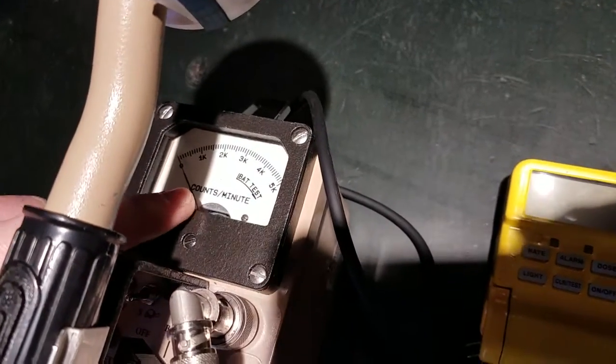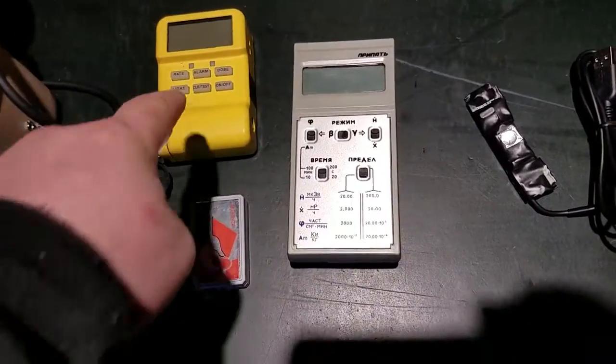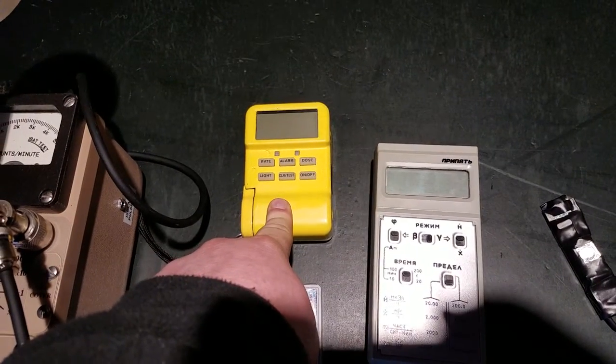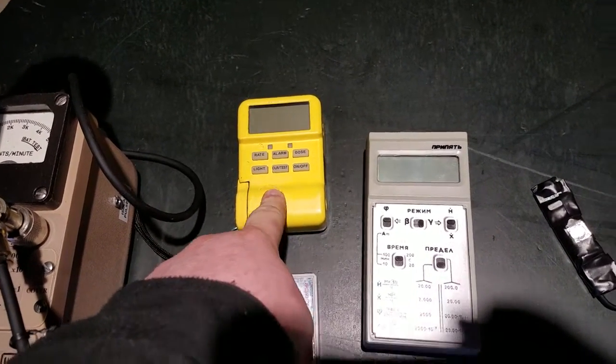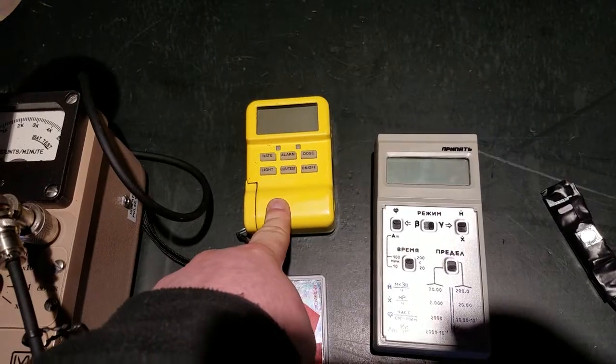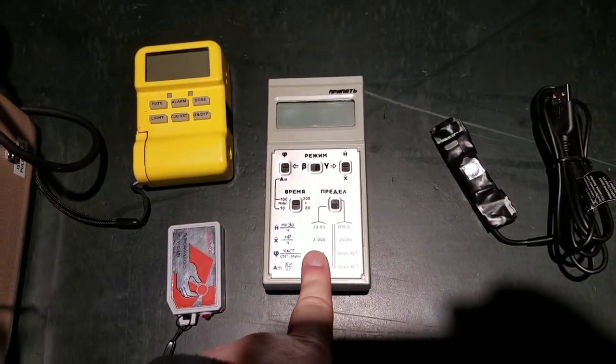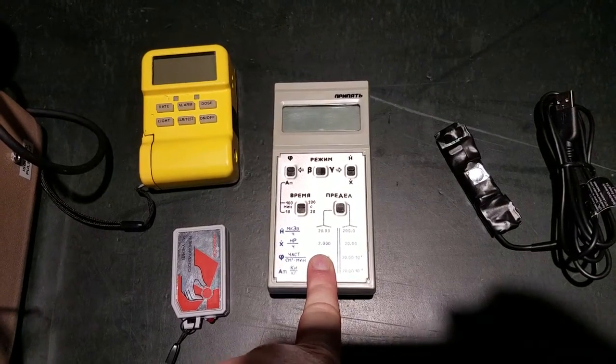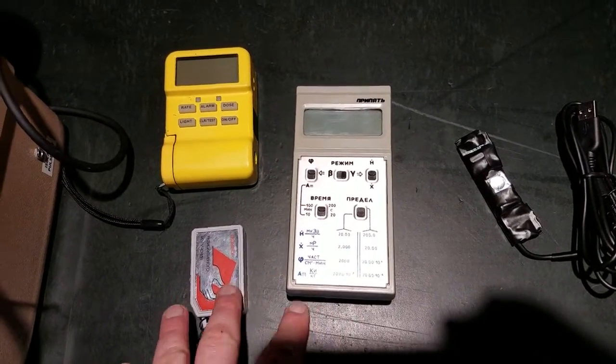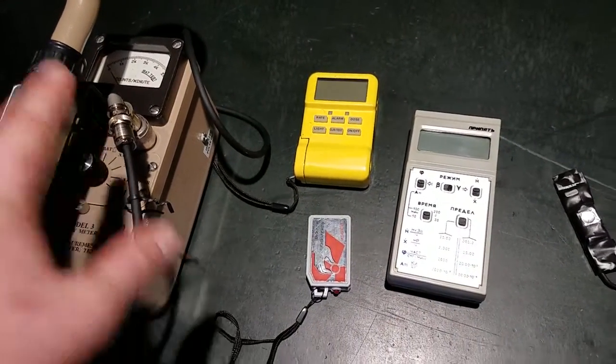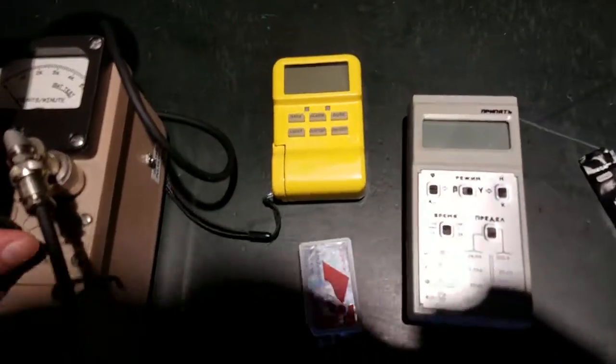This thing actually has a display that's in counts per minute. This guy's a dosimeter, so its display will be in micro-roentgens per hour, milliroentgens per hour, or roentgens per hour if you're in a really nasty radiation field. This guy will show you a number of different measurements. But with all of these four instruments, you can actually hear the individual clicks when an event occurs.